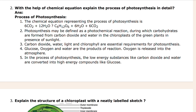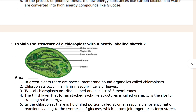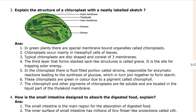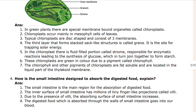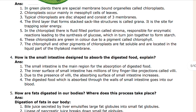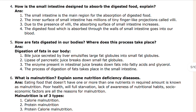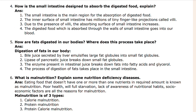Next you can see this question: explain the structure of a chloroplast with a neatly labelled sketch. This is answered here. Then the fourth question: how is the small intestine designed to absorb the digested food - explain.